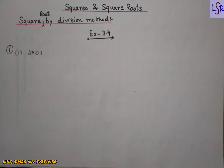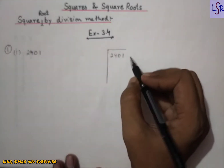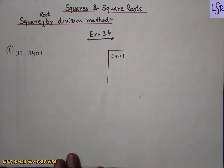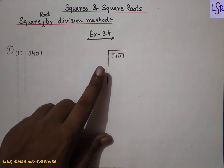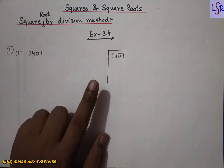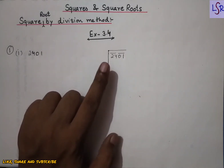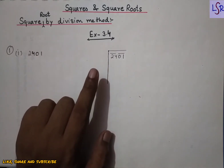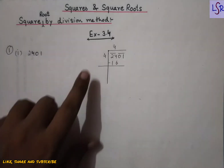First of all we are going to write the number and then make a pair from the back. We take 01 and then 24. Then we are going to start with 24, counting by the square table: 1×1=1, 2×2=4, 3×3=9, 4×4=16, 5×5=25. Since 25 exceeds 24, we take 4×4=16. Then we subtract 16 from 24 and add 4 over here.